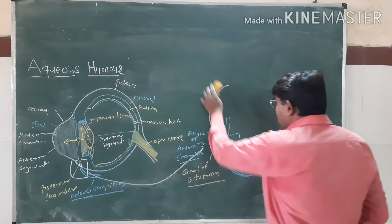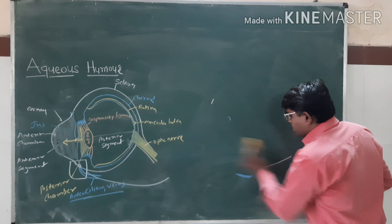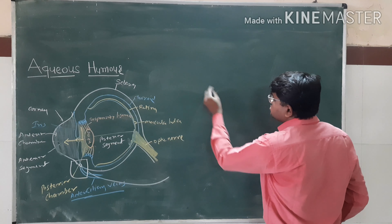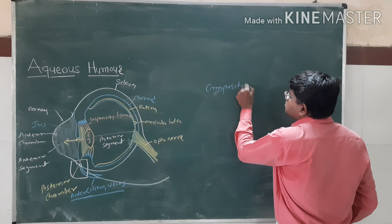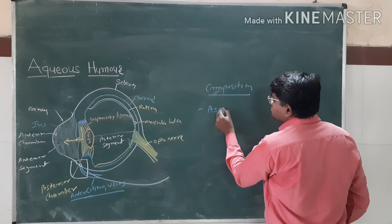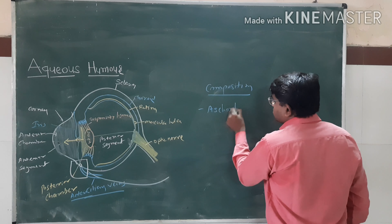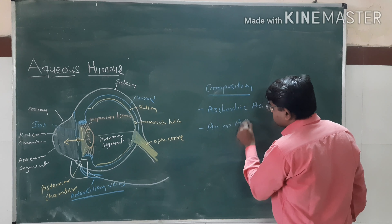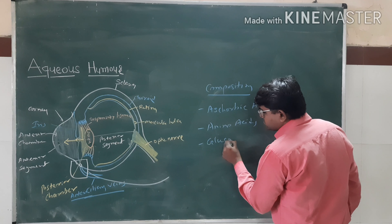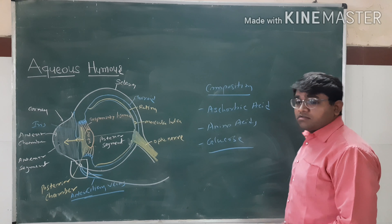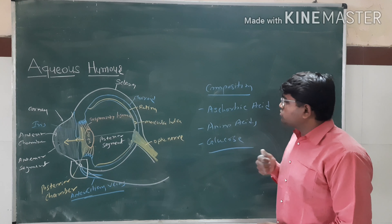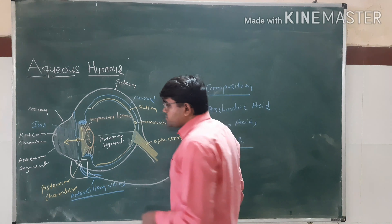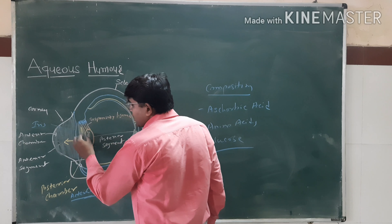Now the composition of the aqueous humor. The aqueous humor is composed mainly of three components: ascorbic acid, amino acids, and glucose. The main composition of the aqueous humor consists of ascorbic acid, amino acids, and glucose. Its function is nourishing the cornea and the lens.